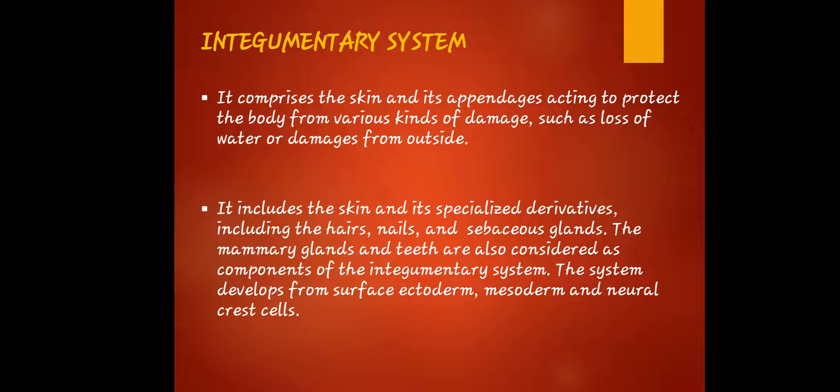The integumentary system is called the largest organ because the outside appearance of ourselves is all skin. Skin is for the protection of the internal organs — it is the wall or barrier of your body because it separates the external from the internal. That is the integumentary system.